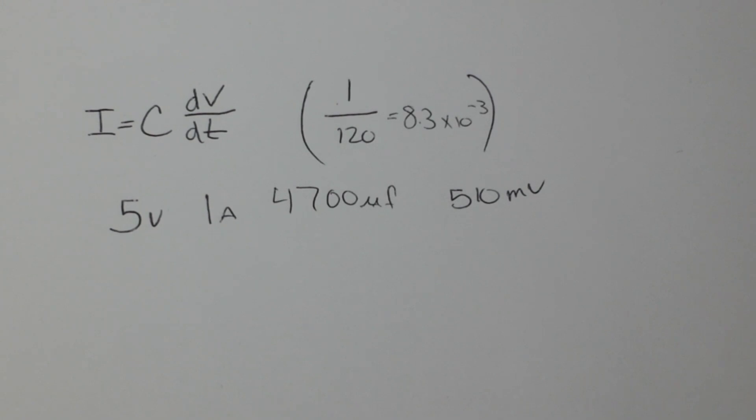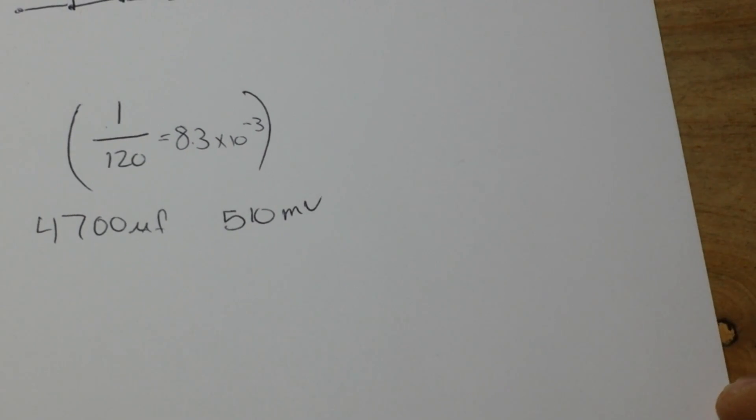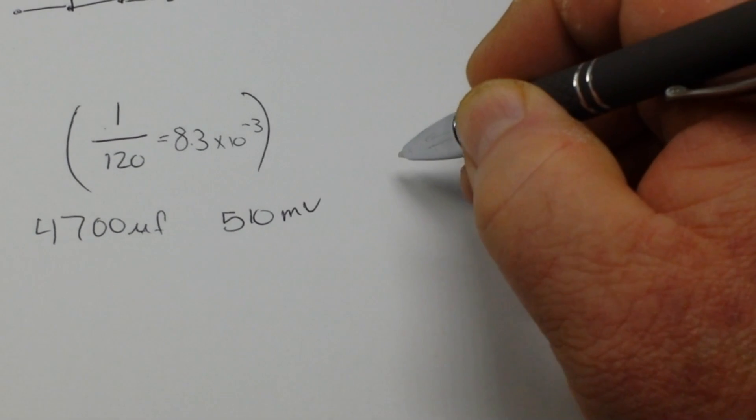But one thing you have to keep in mind is that when you're using voltage regulators, they often have a ripple rejection factor, and it's often given in dB, but you can figure that out relatively easily. Let's say a 7815 has a ripple rejection characteristic of 60 dB.